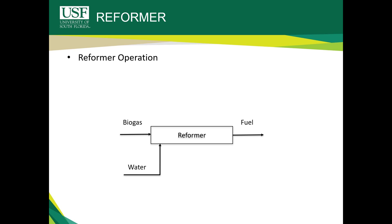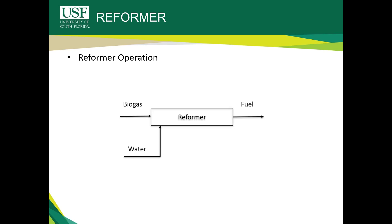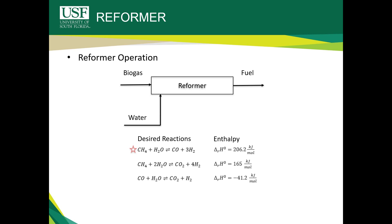Here is the operation of the reformer reactor. The reactor utilizes a nickel-based catalyst at a thousand degrees Celsius and one atmosphere. The nickel catalyst was used based on research performed by Borelli and his team. The most desirable product is hydrogen, achieved through the desired reactions. The most common desired reaction is methane and water to carbon monoxide and hydrogen. Even though hydrogen is more desirable, the fuel cell will also utilize the carbon monoxide produced, which converts some of it into the more desirable hydrogen.